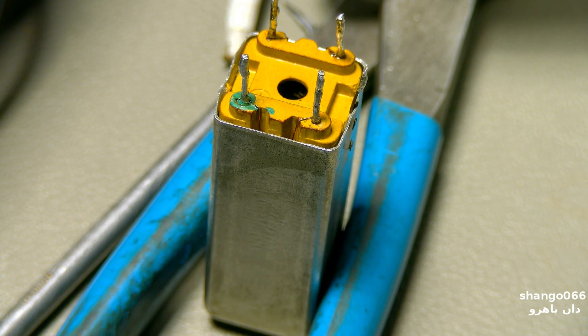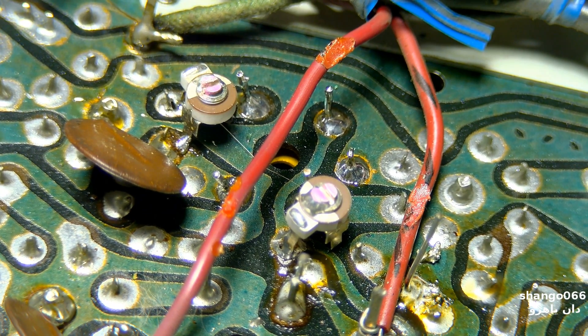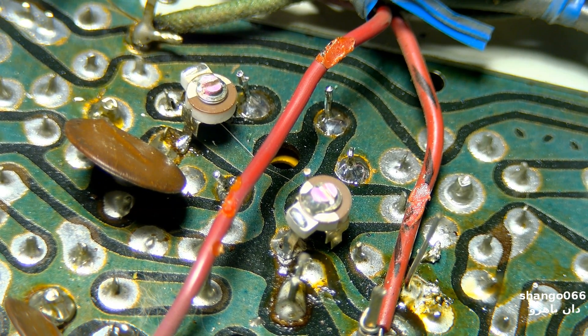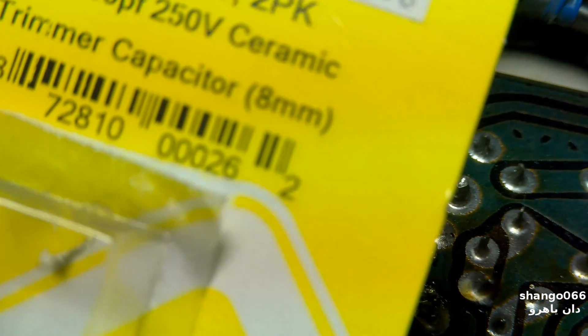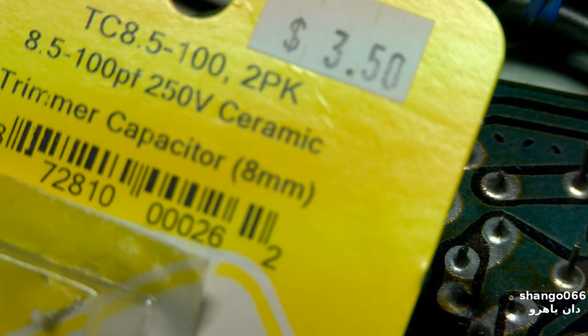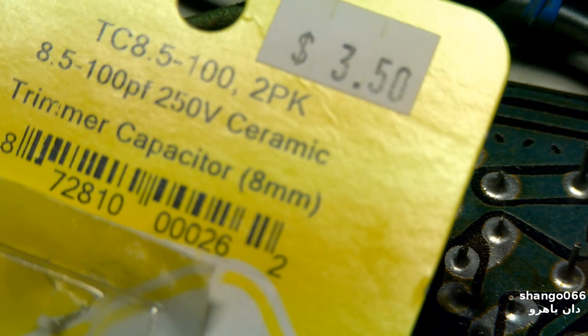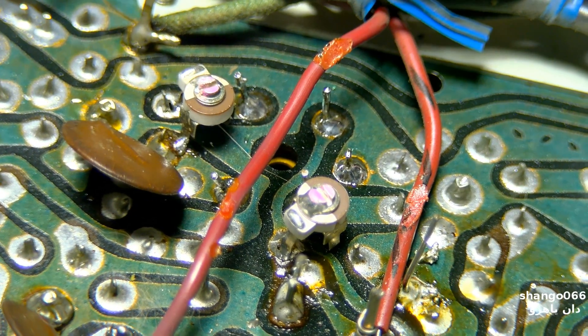All right it's all back together ready to solder back in with the capacitors gutted out and it's all cleaned up. Okay see what we've done here, we've put two 8 to 100 picofarad ceramic trimmer capacitors. Now I'll try and dial it in.